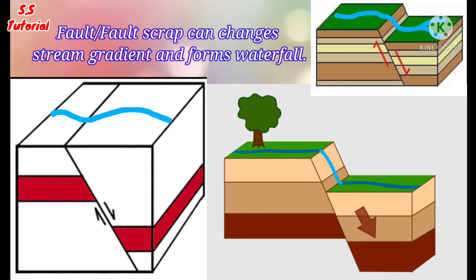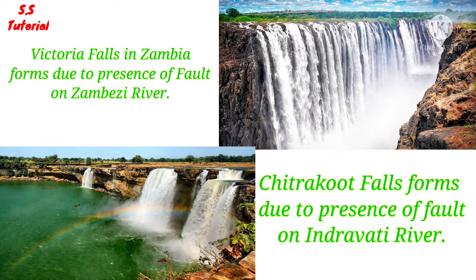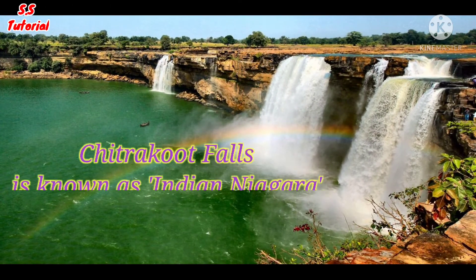If there is a horizontal fault in the course of the river, then a steep slope forms, and when water on that slope falls vertically, it forms a waterfall. Victoria Falls in Zambia and Chitrakut Falls in India form in this way. Chitrakut Falls on the Indravati River in India is known as the Niagara of India.